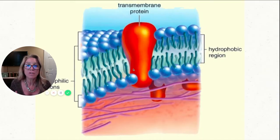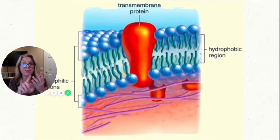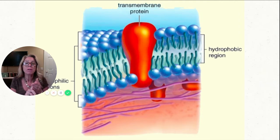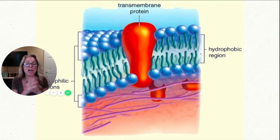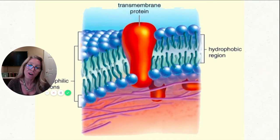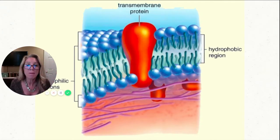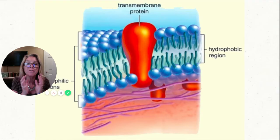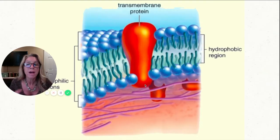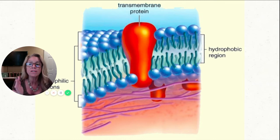A second item you can see here are these large proteins. Remember proteins have primary, secondary, tertiary, and quaternary structure. The primary structure is the sequence of amino acids, the secondary is the alpha helix or beta pleated sheet, the tertiary is the folding pattern imposed by the R groups, and the quaternary is more than one chain. This particular protein is a transmembrane protein — it goes from one side all the way to the other side.